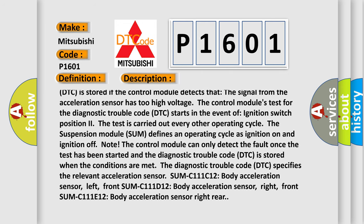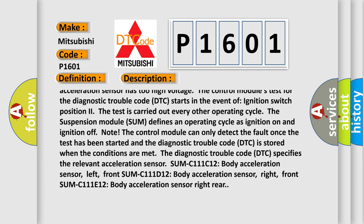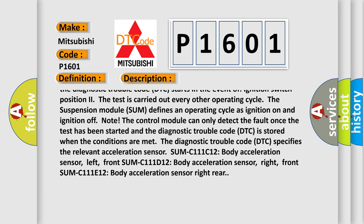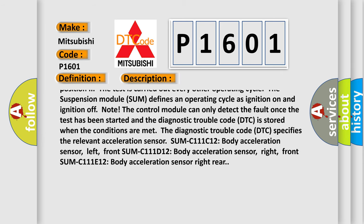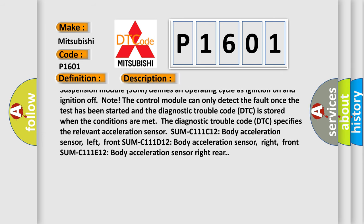The test is carried out every other operating cycle. The suspension module SUM defines an operating cycle as ignition on and ignition off. Note: The control module can only detect the fault once the test has been started, and the DTC is stored when the conditions are met.